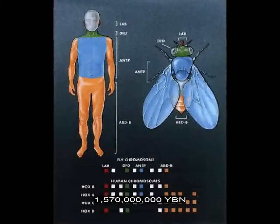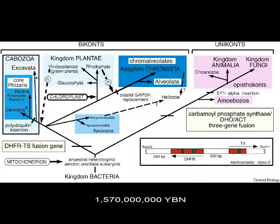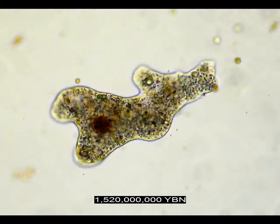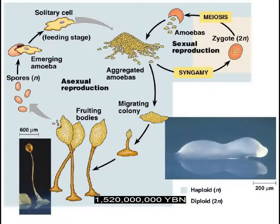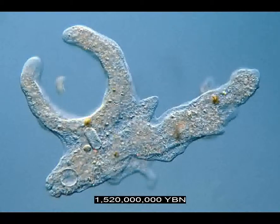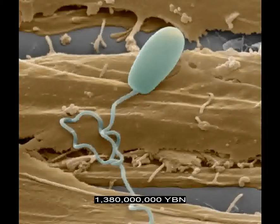First homeobox genes evolve — these genes regulate the building of major body parts. The ancestor of all living eukaryotes divides into bikonts and unikonts. Bikonts lead to all chromalveolates, excavates, rhizaria, and plants. Unikonts lead to all Amoebazoa, animals, and fungi. Protists Amoebazoa — amoebas and slime molds, feeding using pseudopods. Protists Opisthokonts — ancestor of fungi, choanoflagellates, and animals.